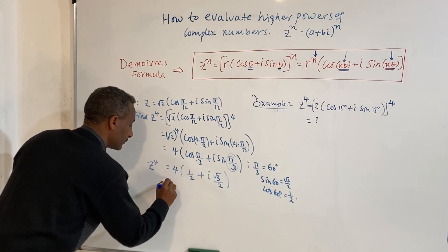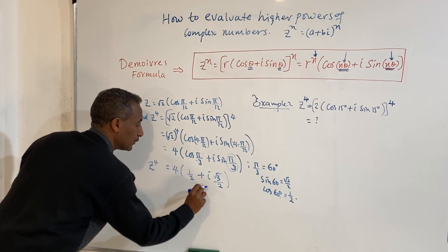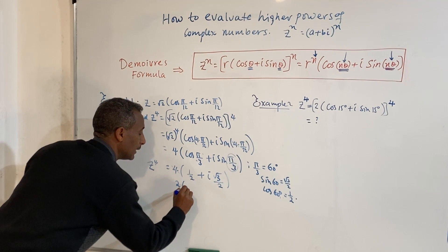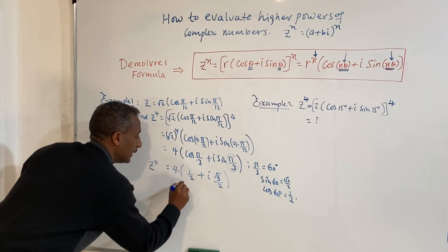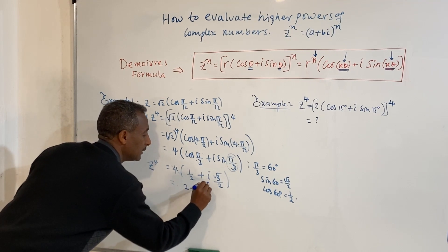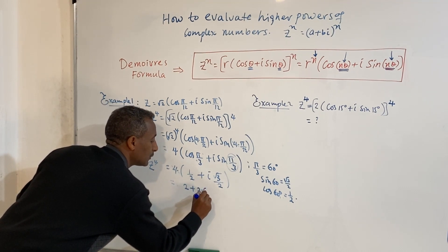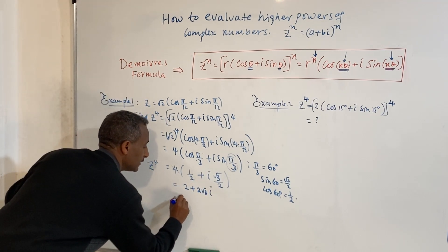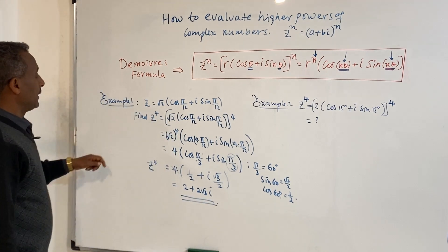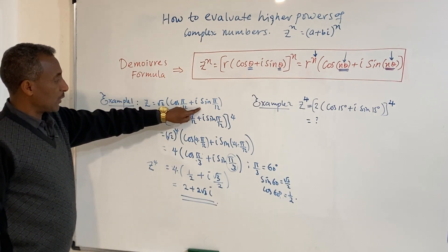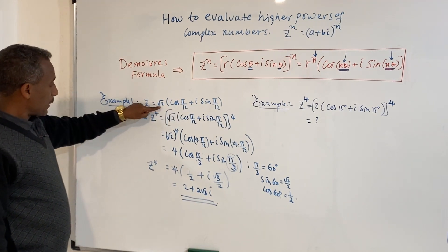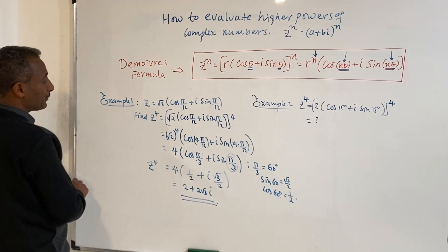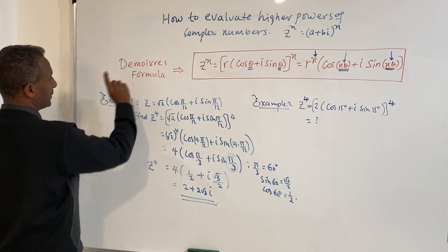4 times cos of π/3 — cos of π/3 is 1/2 — plus i times sin of π/3, which is root 3 over 2. This gives us 2 plus 2 root 3 i. So this is the result. If Z is given in its polar form, Z to the power of 4 will be in its standard form: 2 + 2√3 i.